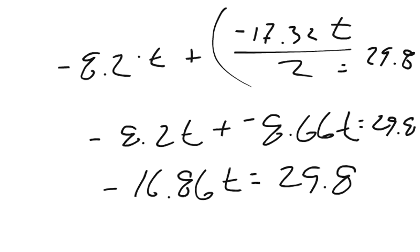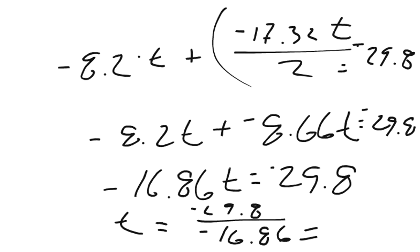Now, the last step is to divide both sides by 16.86. And remember, this is a negative 29. It is a downward direction. So, we're saying it's a negative displacement. Not a negative distance, because that don't make sense. But it's a negative displacement. So, t equals negative 29.8 divided by negative 16.86. And that equals 1.77 seconds. And that is your answer.